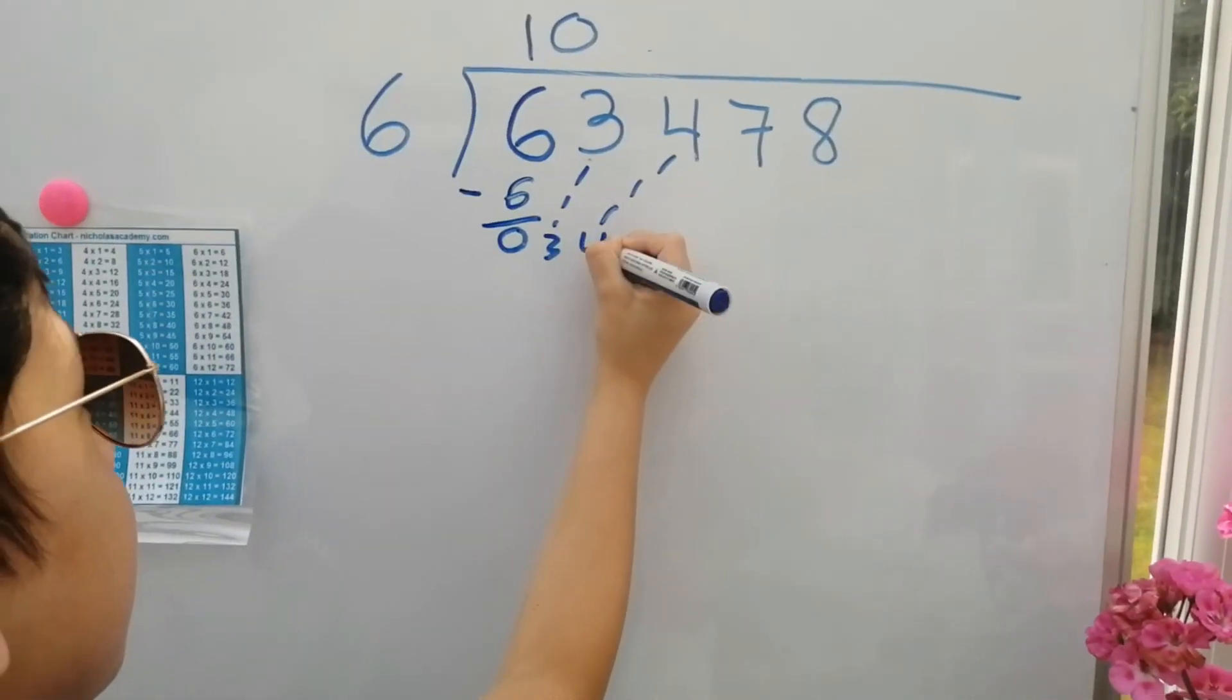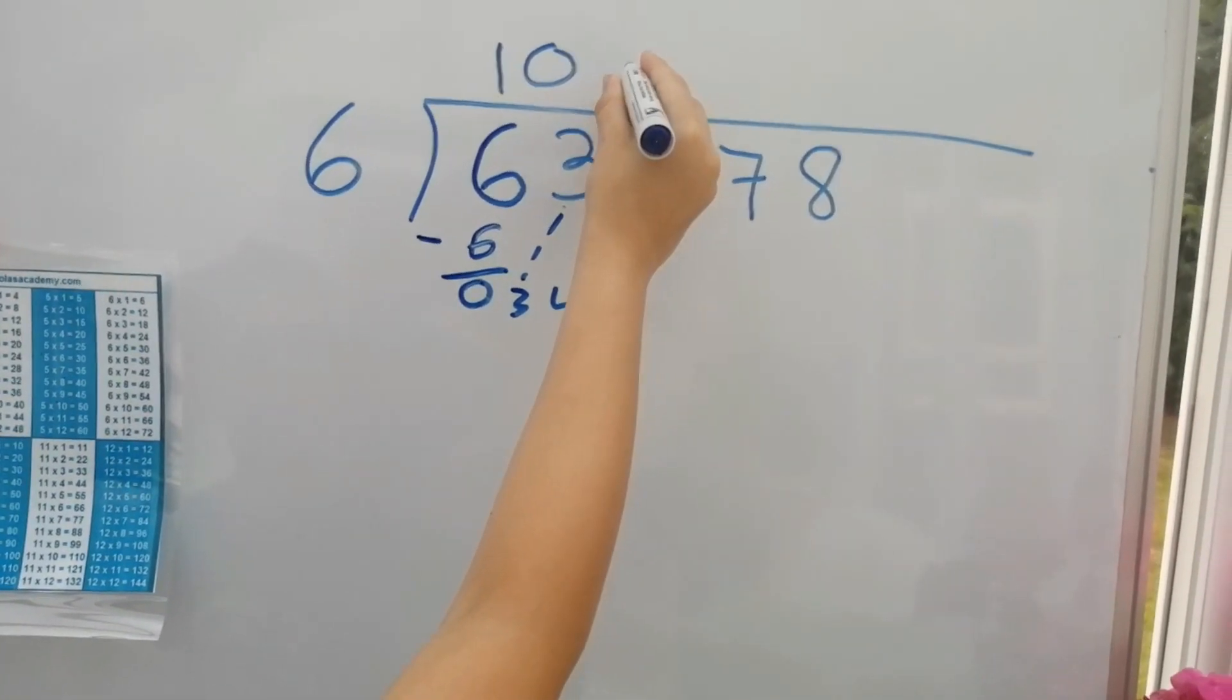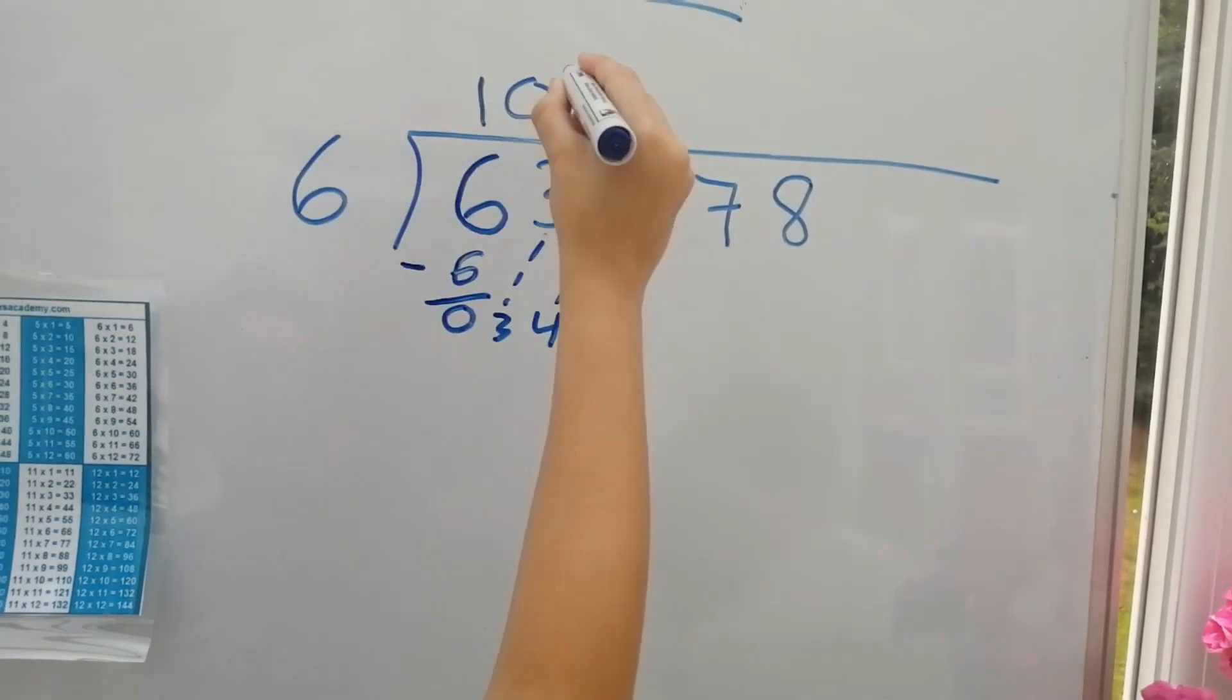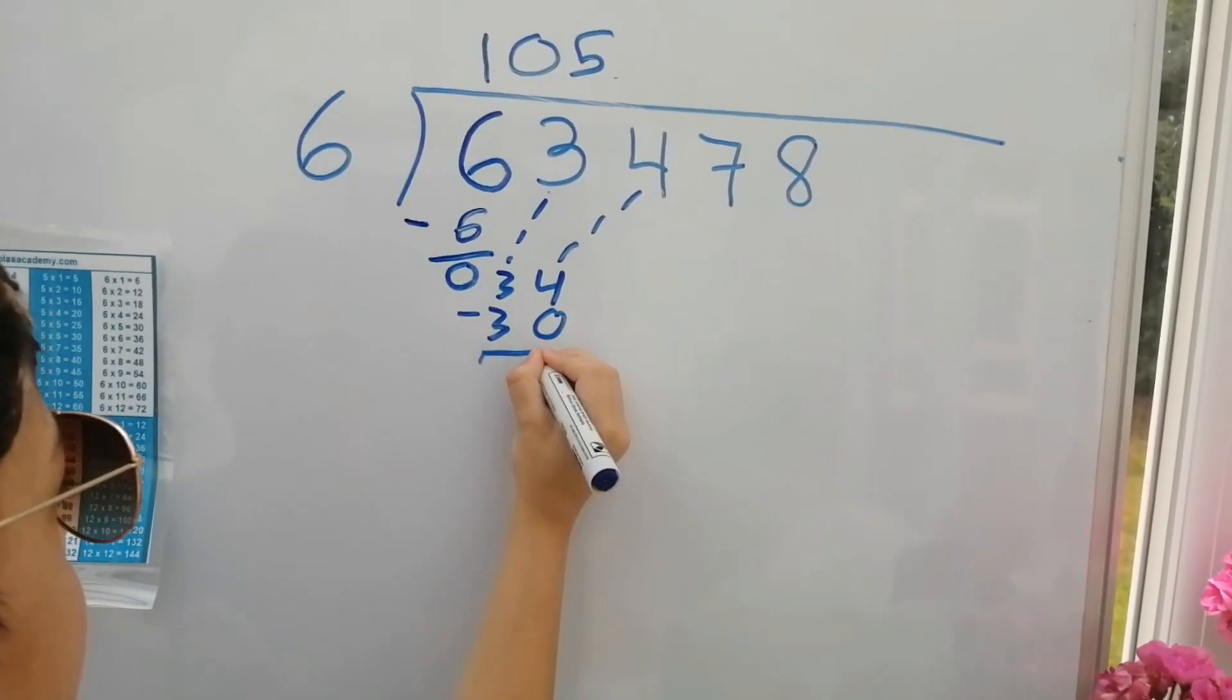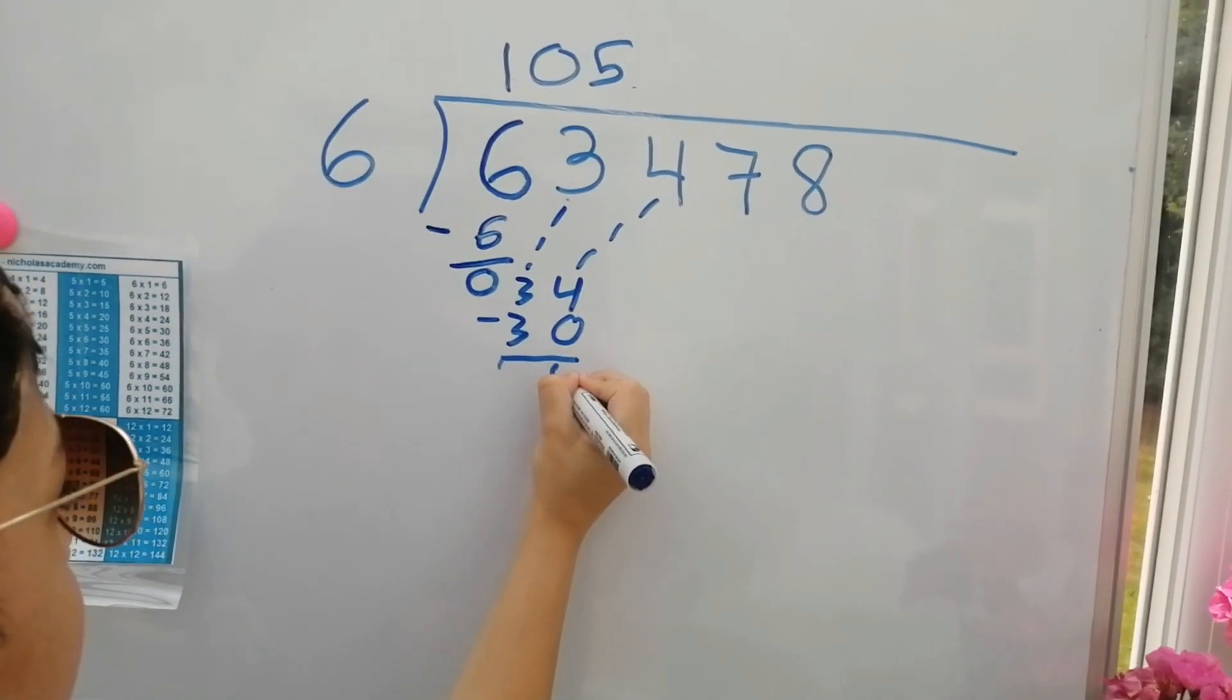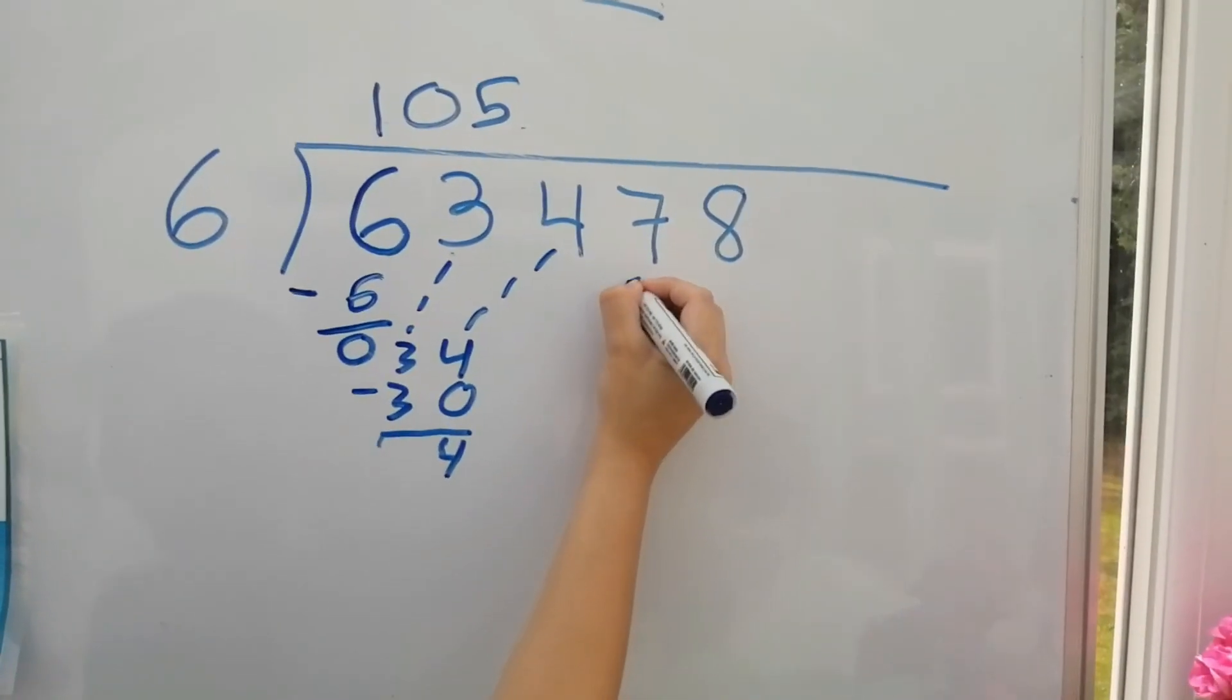Four. Six into thirty-four is five. Six times five equals thirty. Thirty-four minus thirty equals four. Put the next number down.